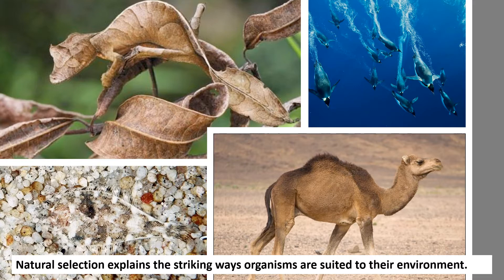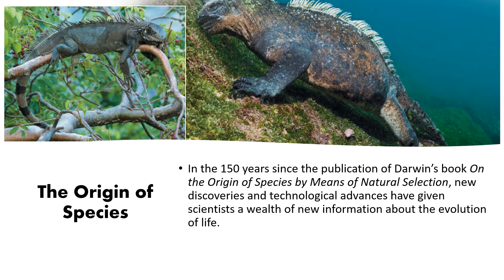Remember, individual organisms don't evolve — it's from generation to generation that evolution takes place. If an organism has a specific characteristic that allows it to survive and reproduce at higher rates, it will have more offspring with that trait. That's how we get lizards that look exactly like leaves, fish that blend in and look like rocks, penguins that basically fly underwater having lost their ability to fly in air but becoming streamlined to dive to extreme depths, and camels that thrive in hostile environments. This is all through the process of natural selection.